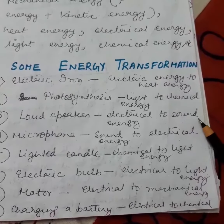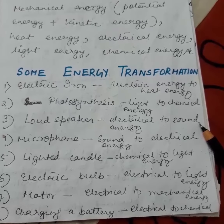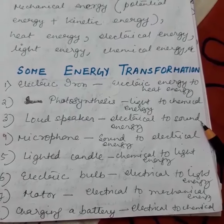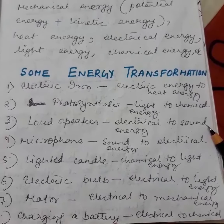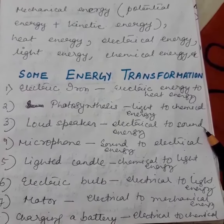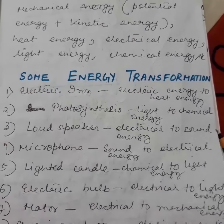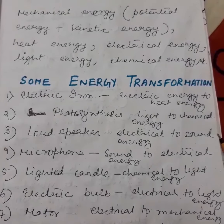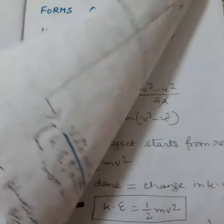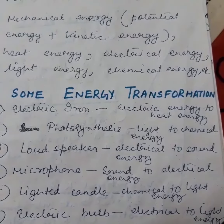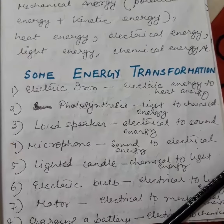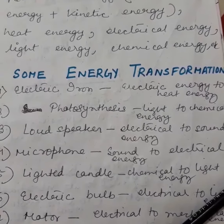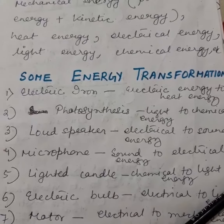You have to remember these examples and write them down in your copy. Whatever I am teaching, you have to note it down — write the content of the video as notes in your physics copy. First understand it, then go through the notes. To conclude: energy means capacity of doing work, the unit of energy is similar to that of work done, energy has various forms, and each form can be converted to another form. Energy remains constant — it is conserved — but can be converted from one form to another.